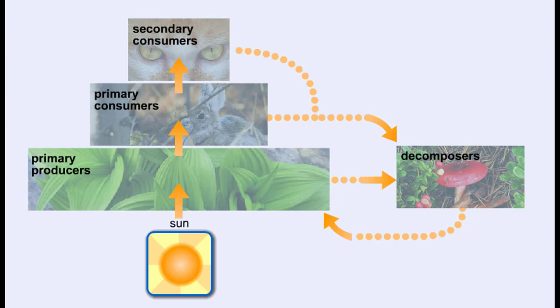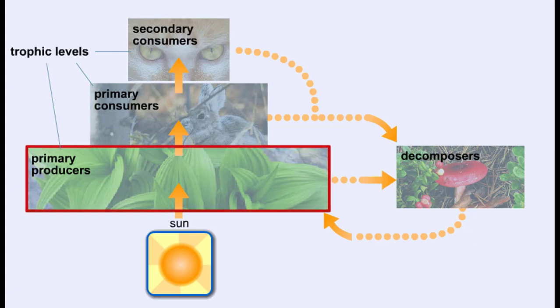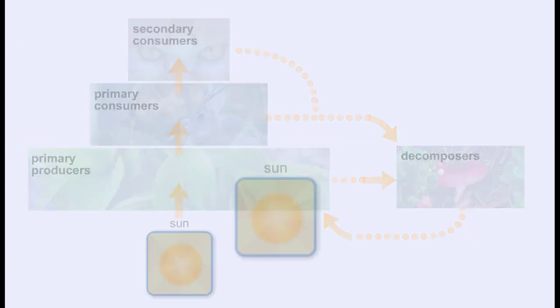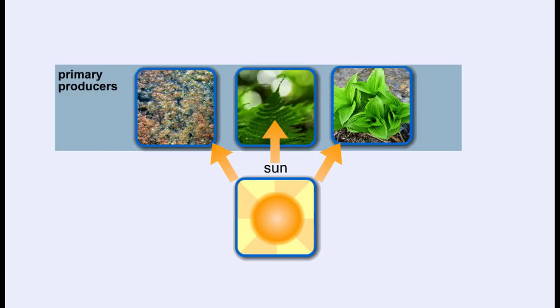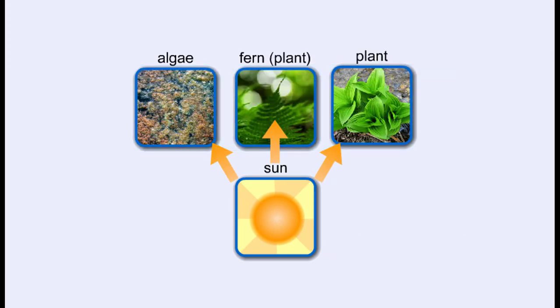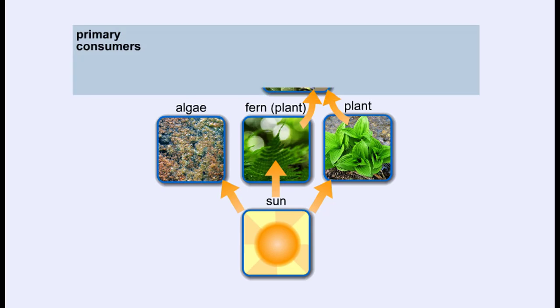We can describe how close an organism is to this primary energy source with a hierarchy of levels called trophic levels. The first trophic level is made up of primary producers, the plants that produce their own food. Primary consumers make up the second trophic level. These are the herbivores, organisms that eat producers.